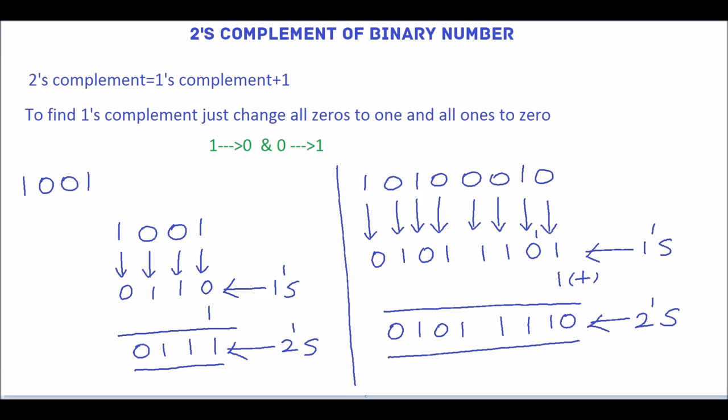Hope you understand how to represent the binary number in 2's complement form. Thank you.